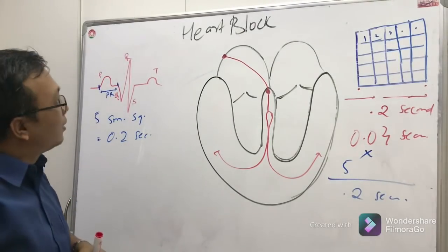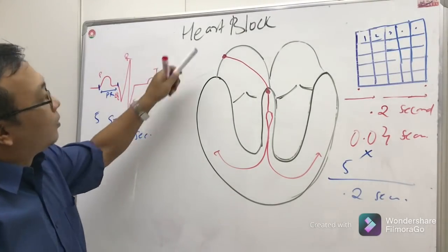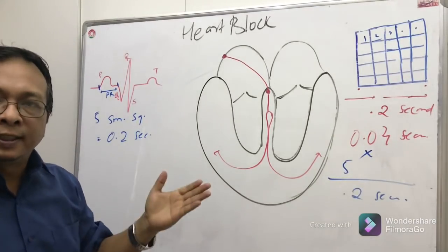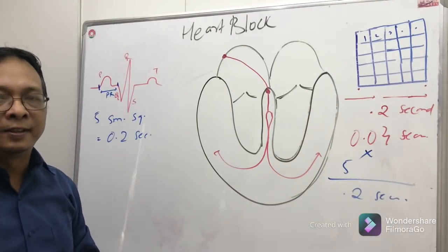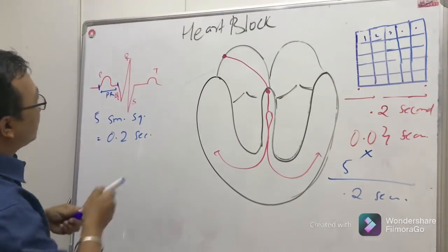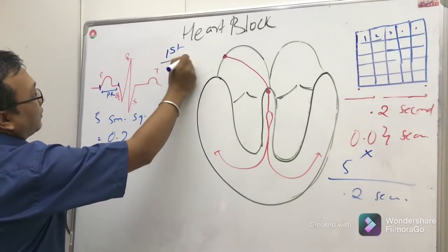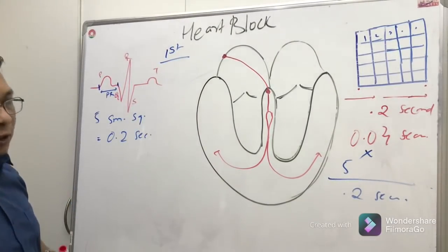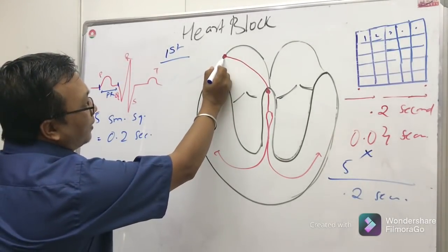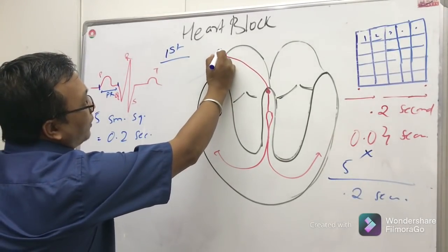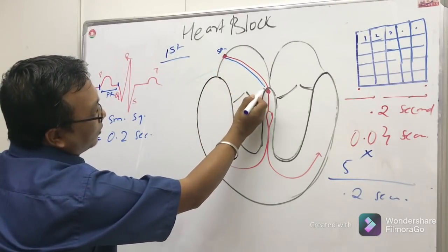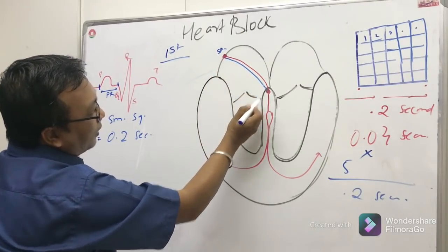There are three types of heart block: first degree, second degree, and third degree. In first degree heart block, the wave comes from the SA node and travels to the AV node — that is the normal pathway — but there is some blockage along this pathway.